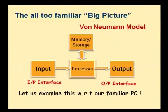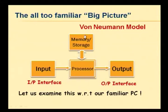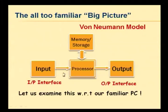To look at the familiar big picture that we talk about, this is referred to as the von Neumann model. Most of you will be familiar with this picture of a computer system — we have an input unit, an output unit, a processor unit, and some memory and storage. Data will come from the input to the processor, the processor processes it, may store it in memory, and then an output will be produced through input and output interfaces.